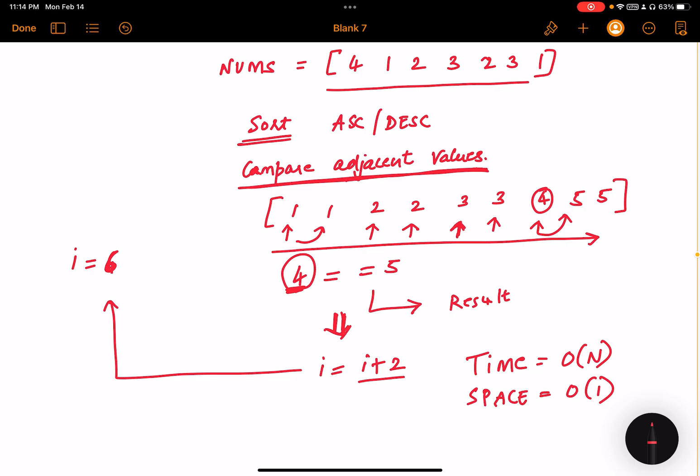And our space complexity is constant space of one, as we are not creating any additional collection. We are just using this one pointer to point to a certain value and comparing it with the next value in the array.